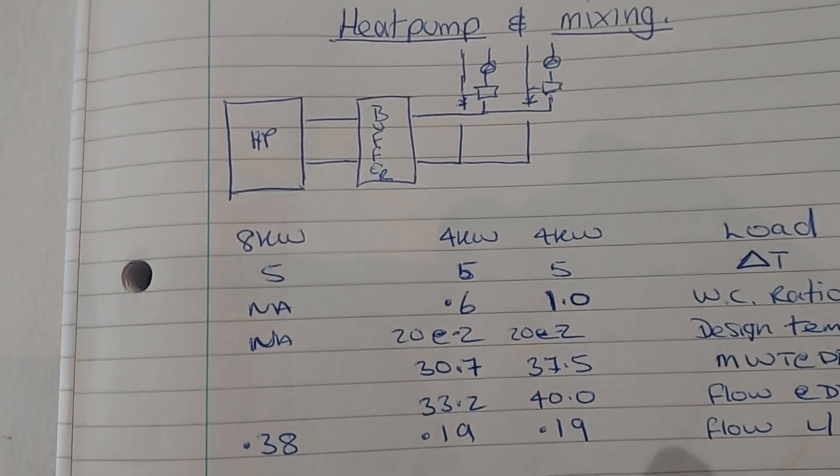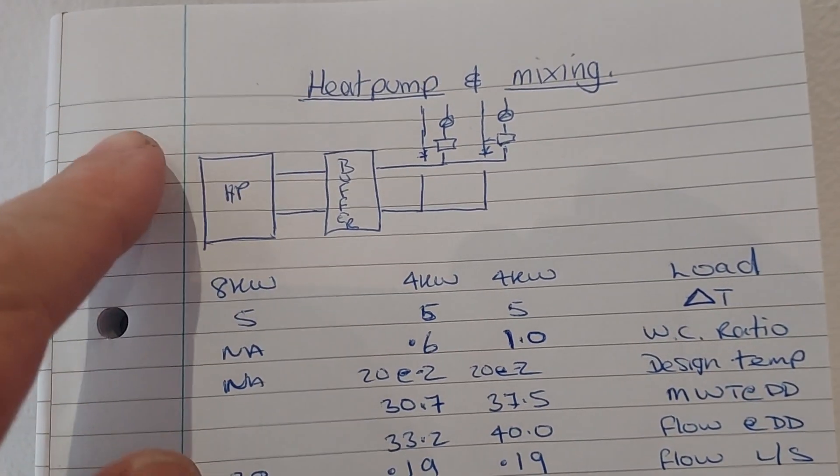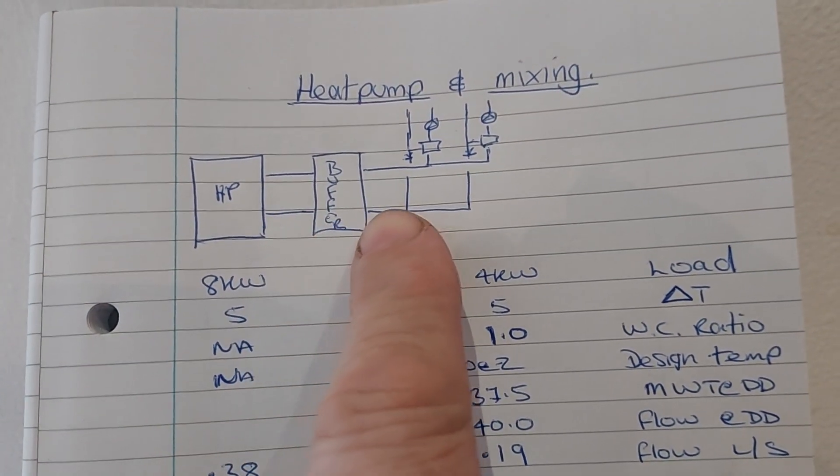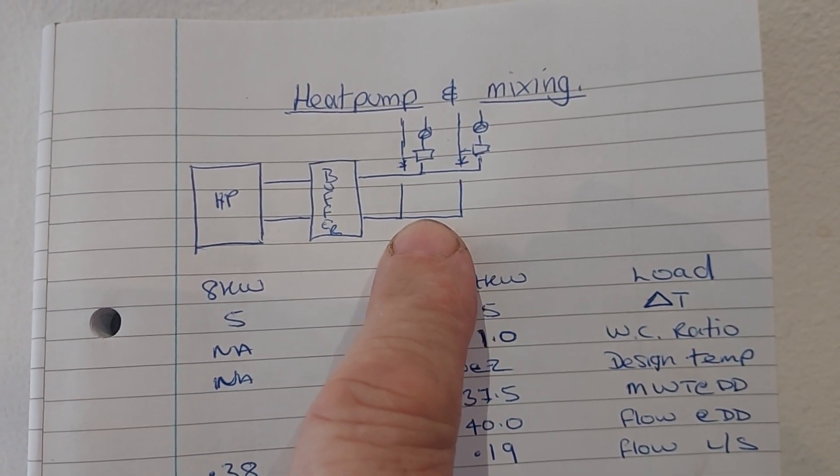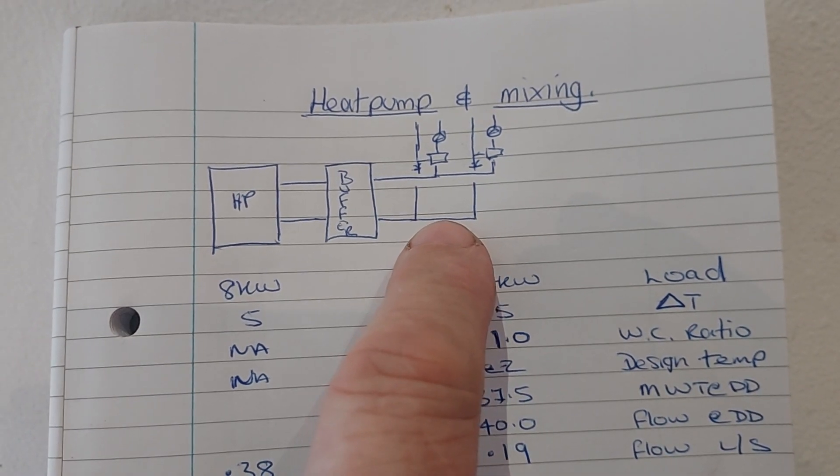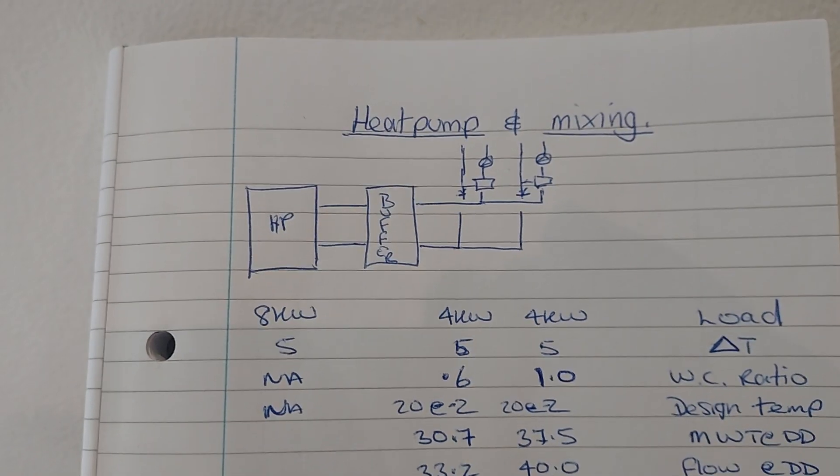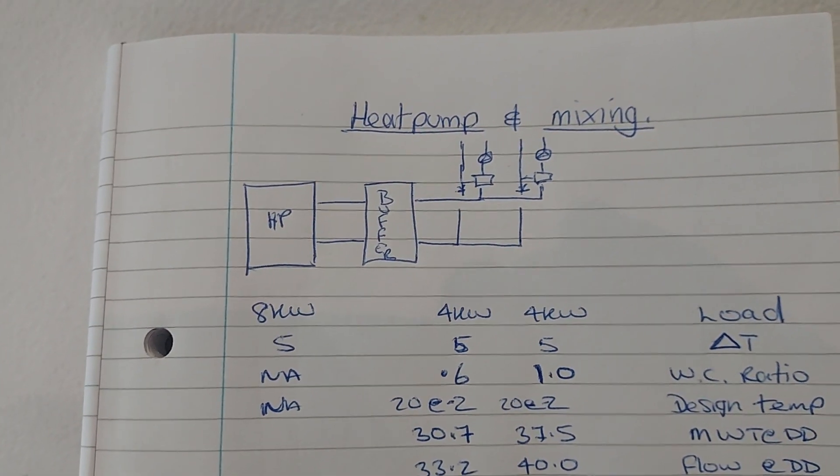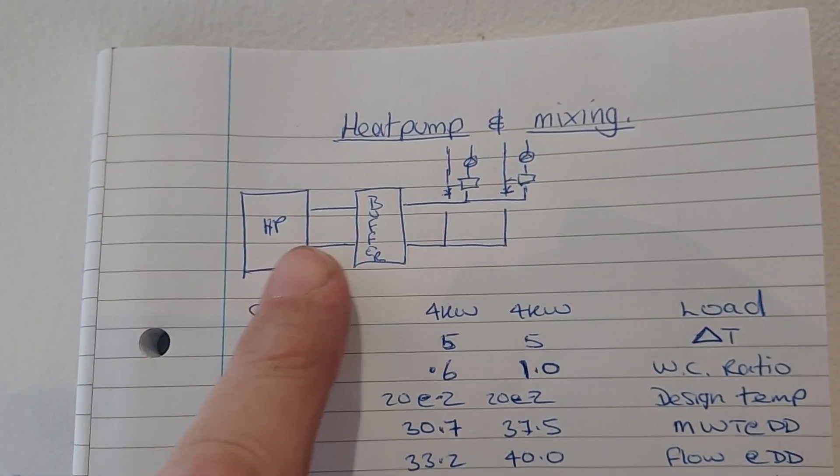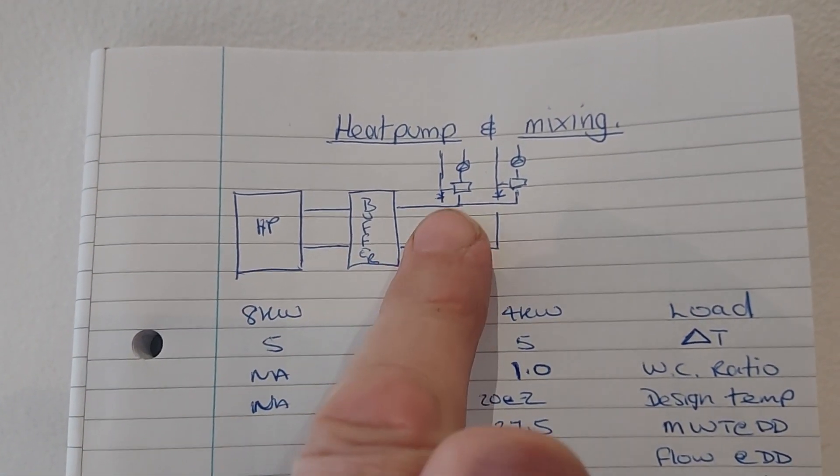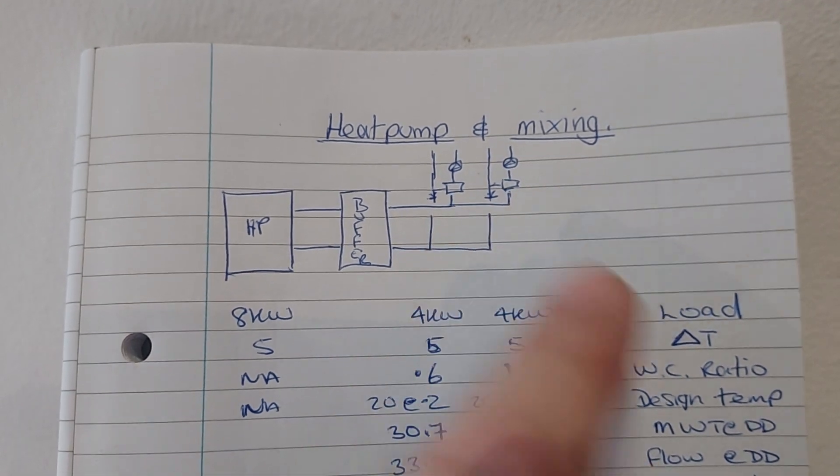Here is a little sketch of a system design that I would like to do. It's also a design that's in the heat pump manuals, certainly in the Panasonic one that I've just fitted. In the design here, we have the heat pump, we have a buffer, and we have two mixed zones.